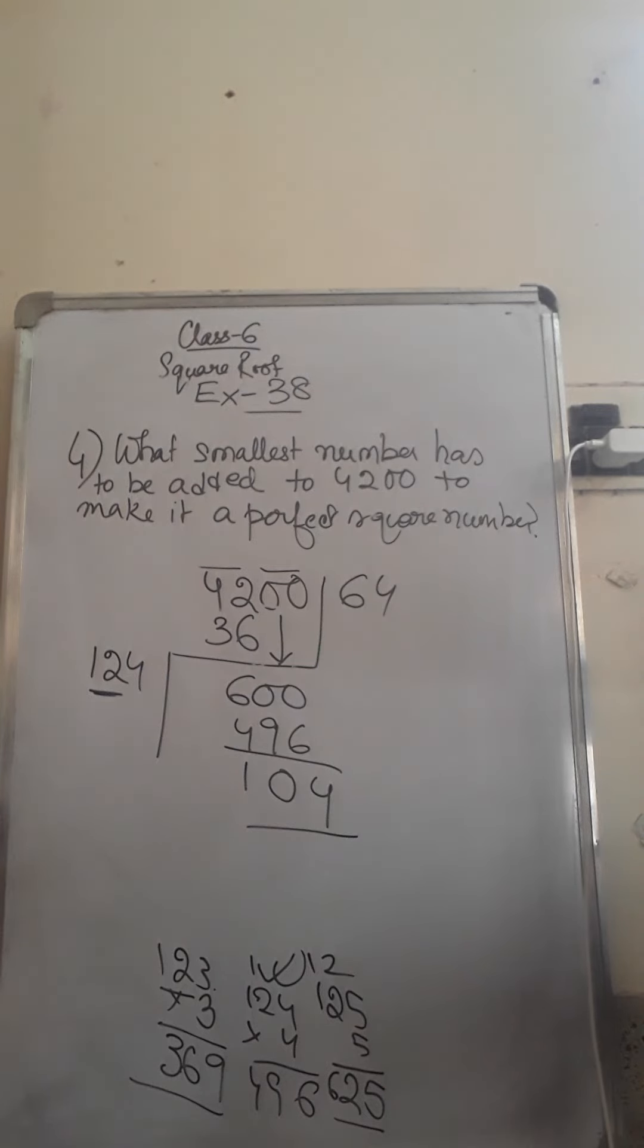So what is the remainder over here? 104. So we are getting a remainder. That means this is not a perfect square, proved.